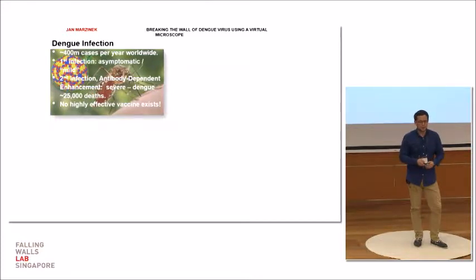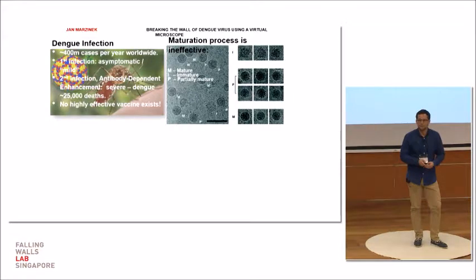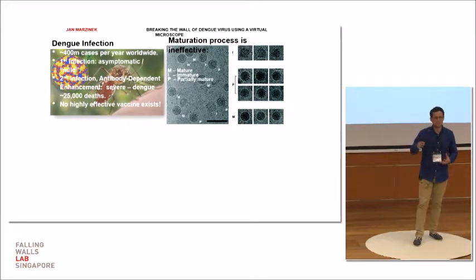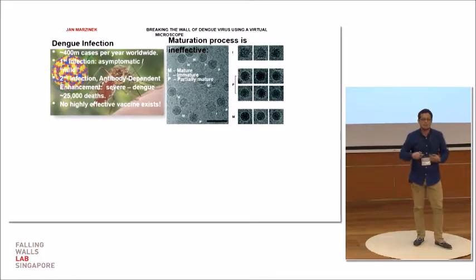This process is called antibody-dependent enhancement. We still have no highly effective vaccine available. This is the picture from electron microscopy of the viruses released from the cell. This picture shows that the maturation process is actually very ineffective.